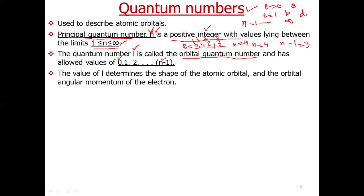The value of l determines the shape of an atomic orbital and the orbital angular momentum of the electron.